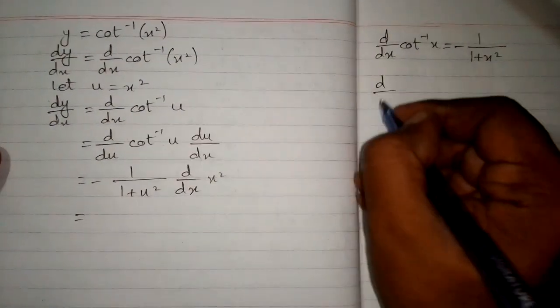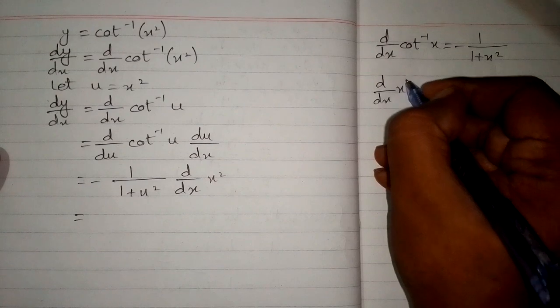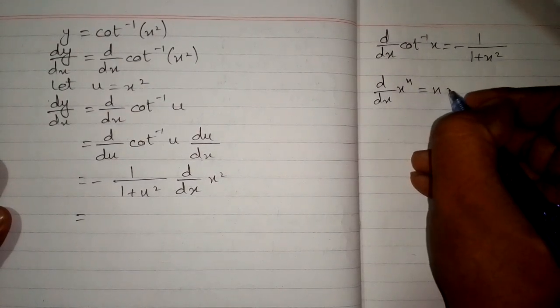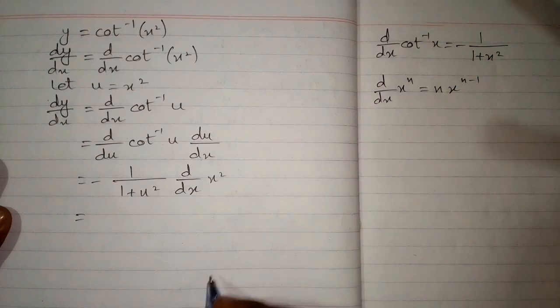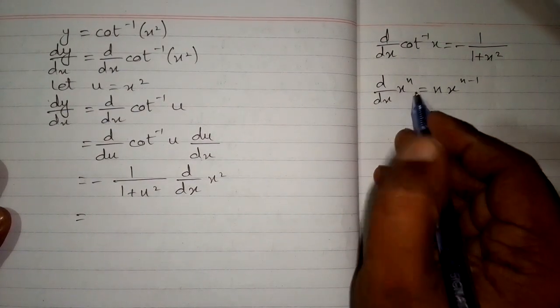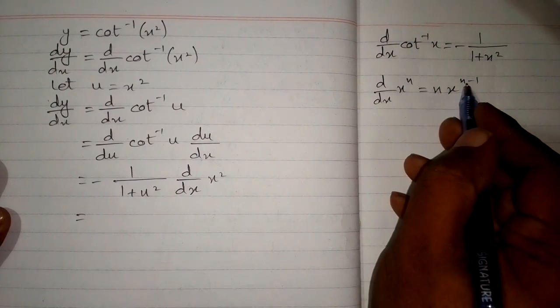Now we will apply the power rule of differentiation. The derivative of x to the power n is n times x to the power n minus 1. We have 2 in place of n, so we will put 2 over here and over here.